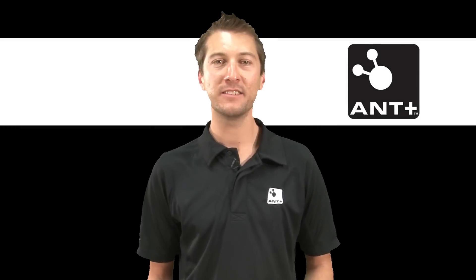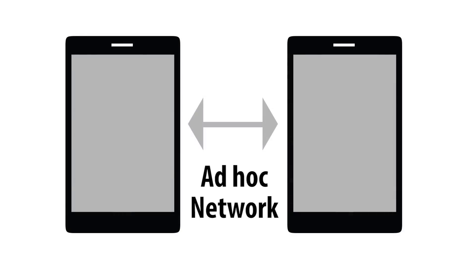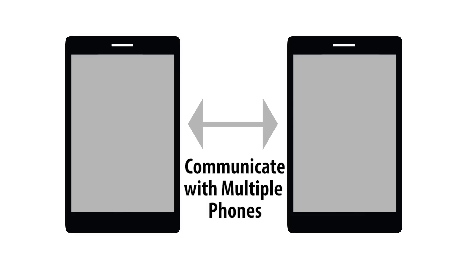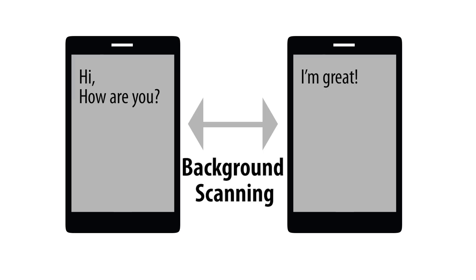In addition, Ant is ideal for low power phone-to-phone communication. The user can set up an ad hoc network on the fly with unrestricted architecture to communicate to multiple phones at once. This is perfect for multiplayer games. For example, you can set up chat rooms, a basic building block for many games, which any phone could act as the server, using advanced features like background scanning and shared channels to connect multiple phones together.